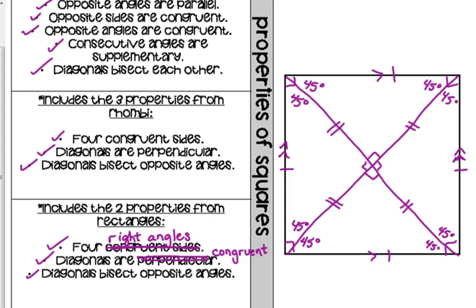As a quick review of special right triangles: if one of the bisected diagonals is 3 inches, what would be the length of the side of the square? For 45-45-90 triangles, the two legs have the same length, and the hypotenuse is the leg length times the square root of 2. So the answer is 3 times the square root of 2. The 3-4-5 triangle is a different special right triangle, not a 45-45-90.